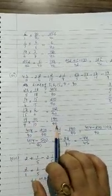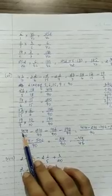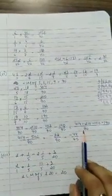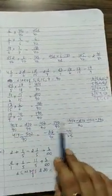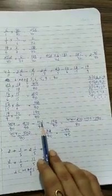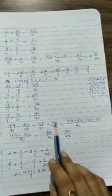Now 414/90 minus, bring the signs from here, minus 210/90 minus 102/90 minus 190/90. LCM will be 90. So 414 minus 210 minus 102 minus 190.